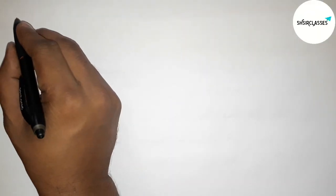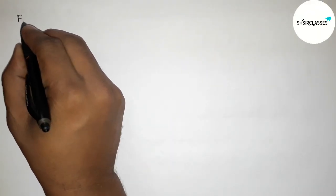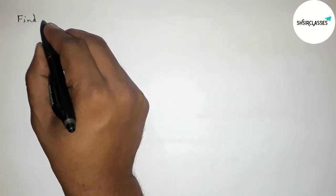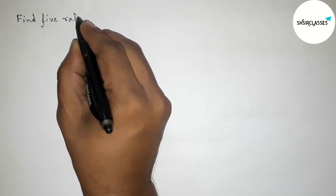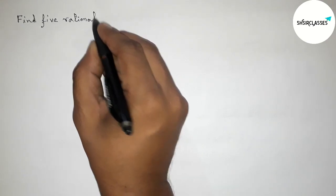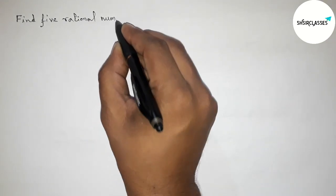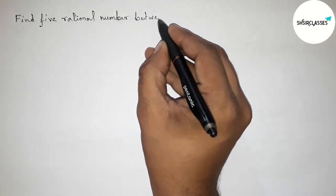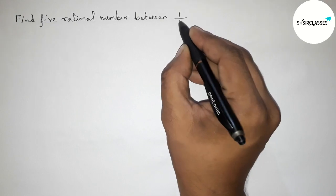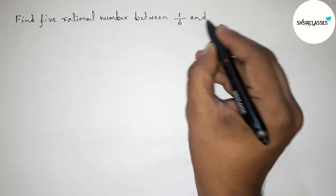Hi everyone, welcome to SI Share Classes. Today in this video we have to find five rational numbers between 1/6 and 1/7 in an easy way. Please watch the video till the end, so let's start.